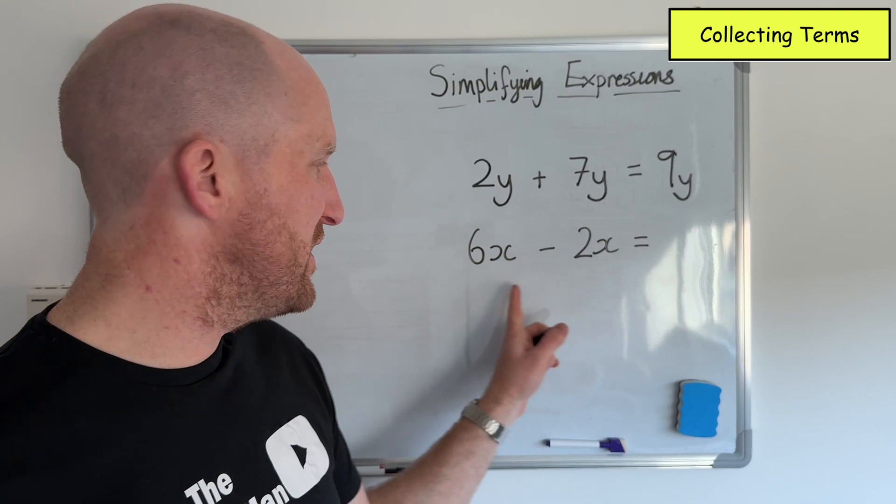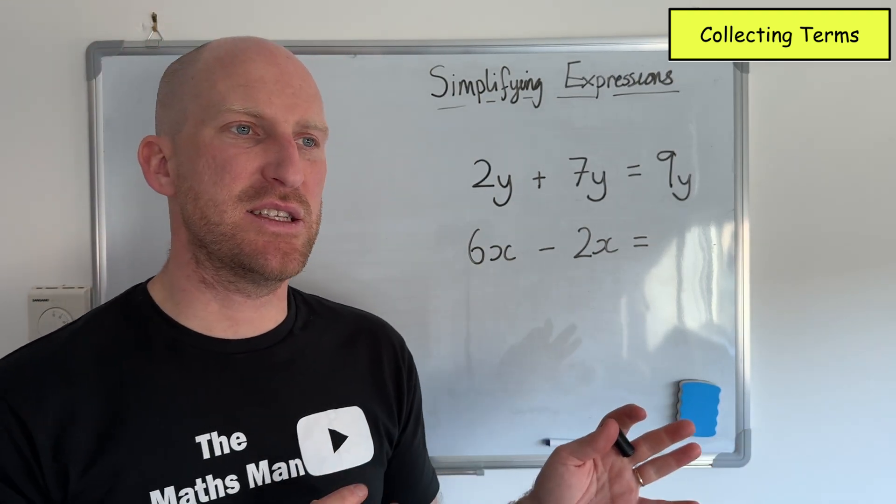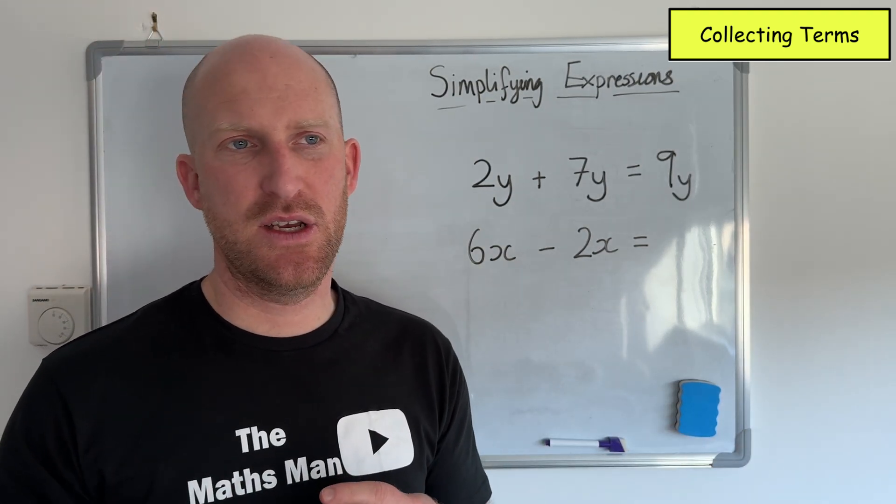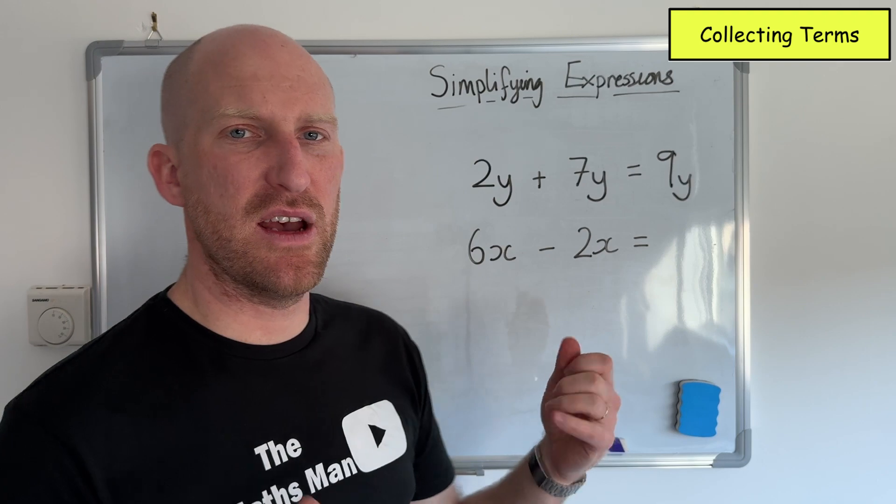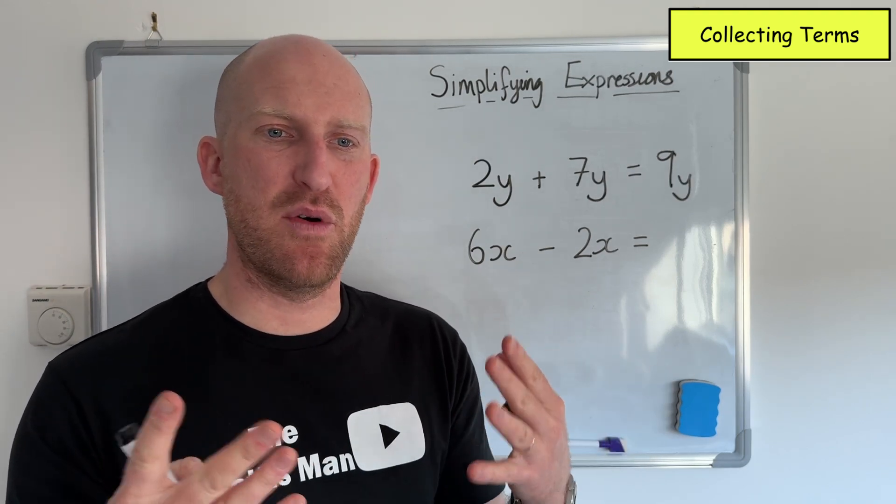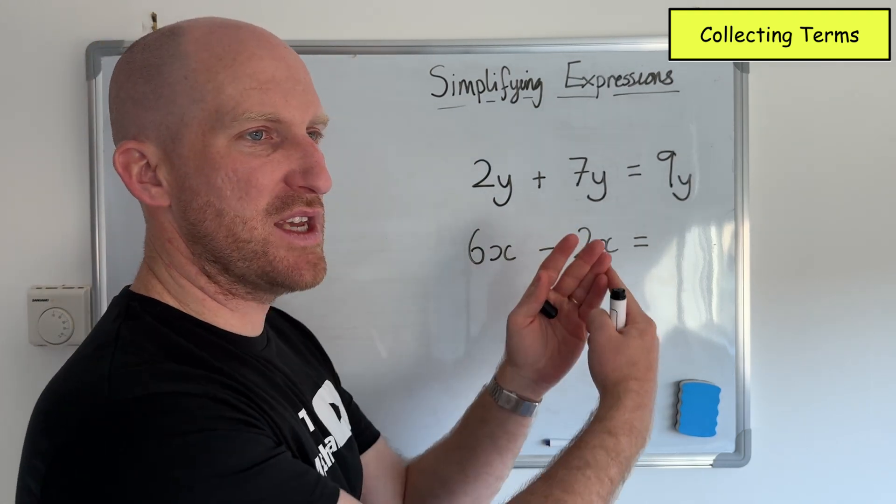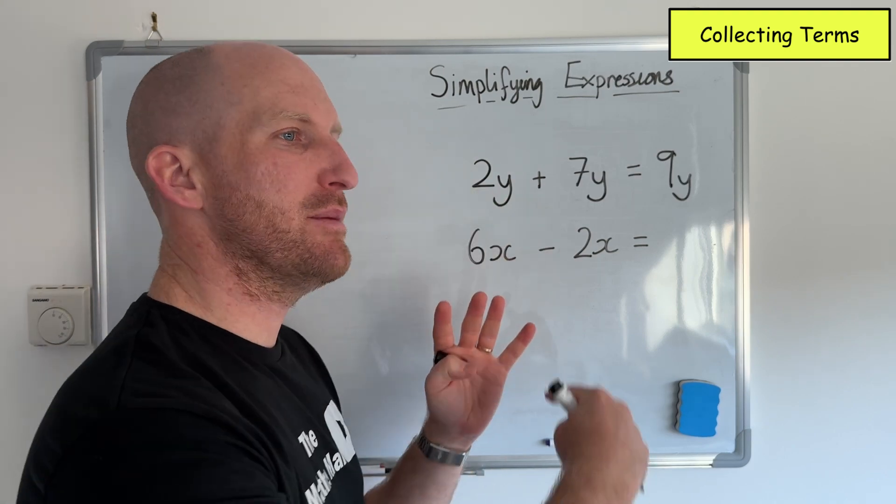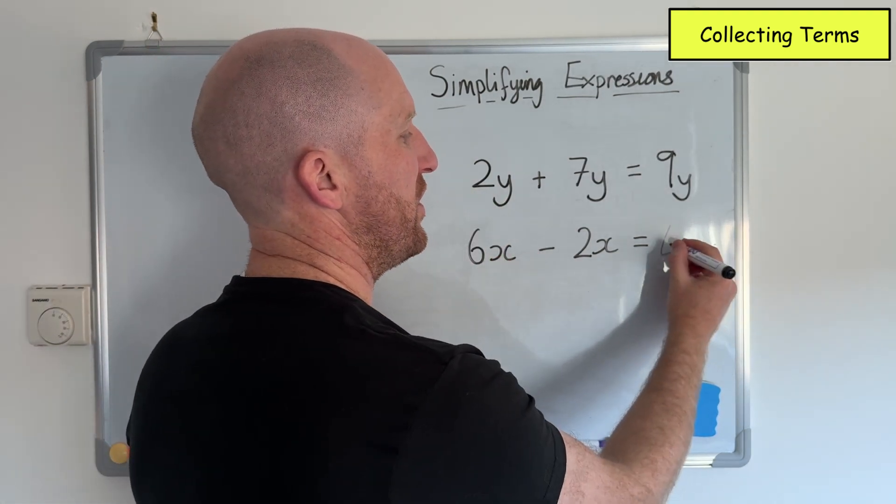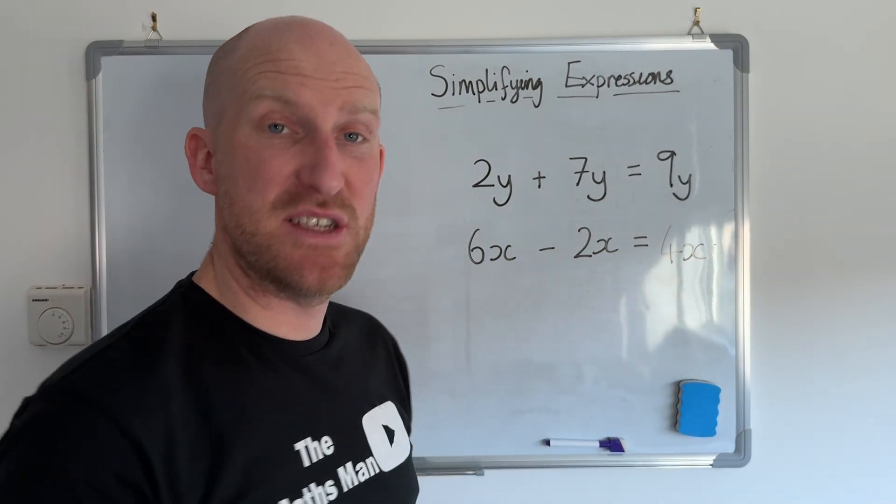Similarly with this one here we've got 6x take away 2x. Again there's no point in me having that because they're both x. They're both the same. So I'm going to put those two together. So if I have 6 and I'm taking away 2 I'm going to call it 4x instead.